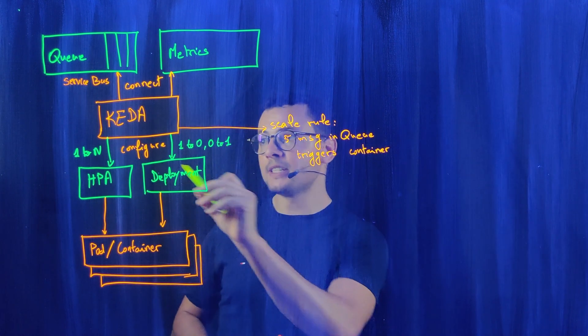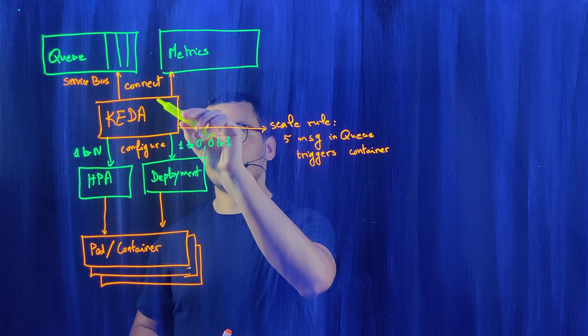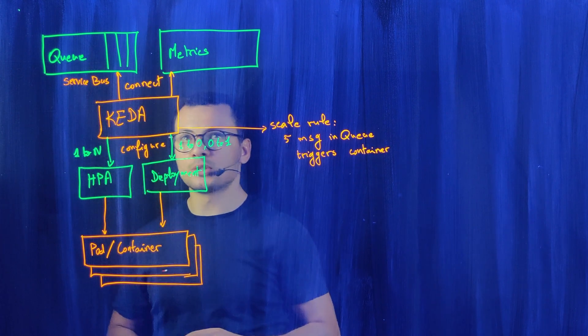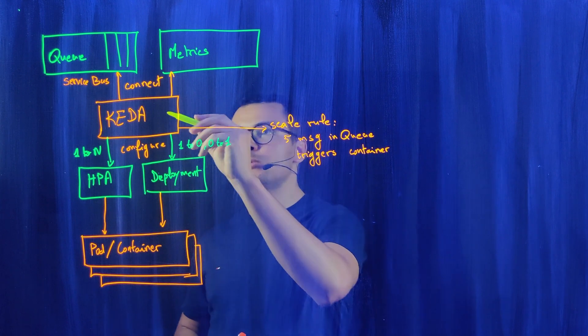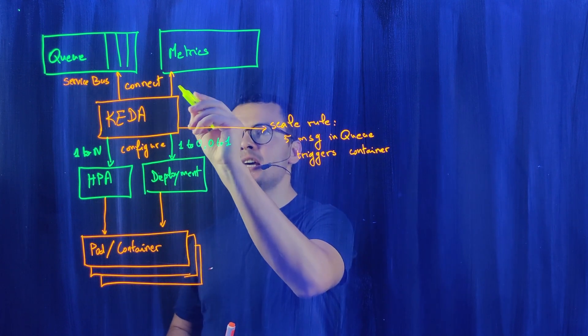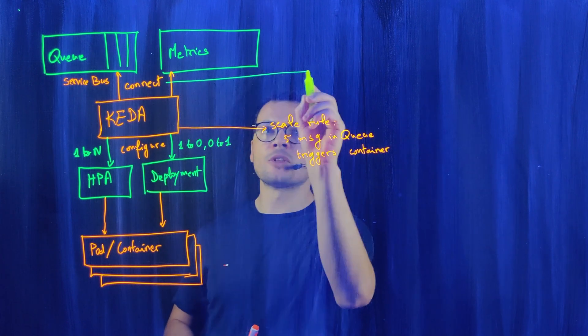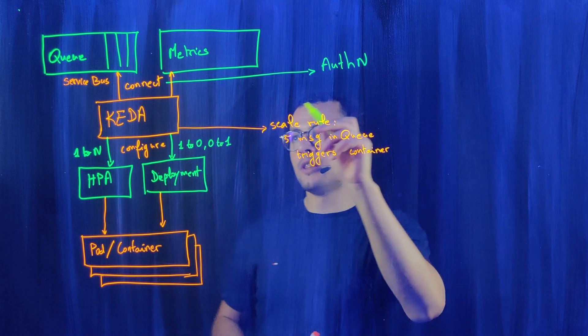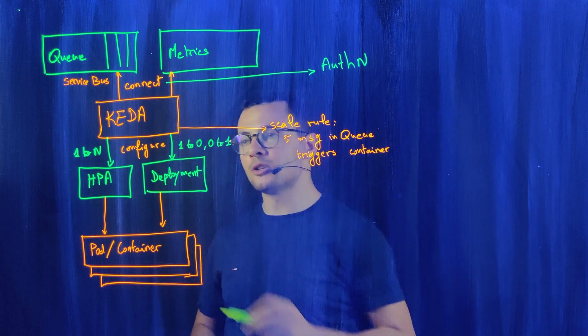For this KEDA component to be able to connect to those external systems, like Azure Service Bus, it will need to authenticate and authorize. This depends on the configuration for KEDA.